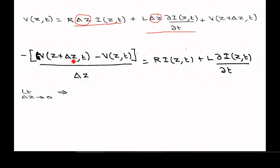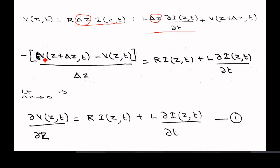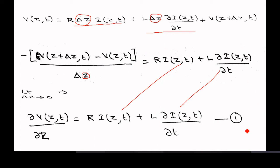If we take delta z tending to zero, this term corresponds to the differentiation of the voltage term. The difference is taken at z + delta z and z at the same time instant, divided by delta z — so this corresponds to the voltage differentiation with respect to z. This gives equation 1: −∂v/∂z = r·i(z, t) + l·(∂i/∂t).